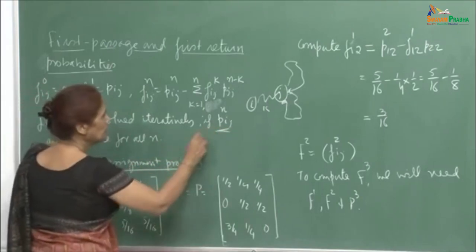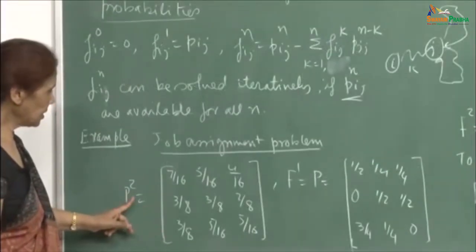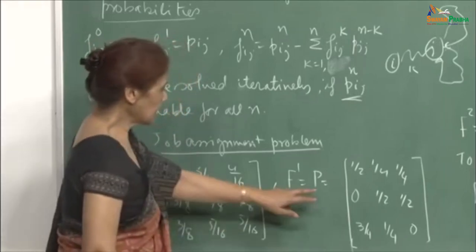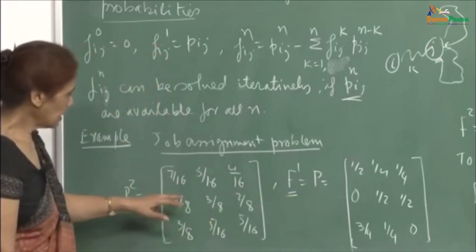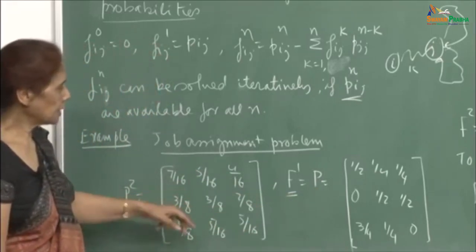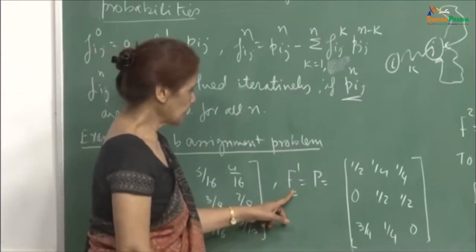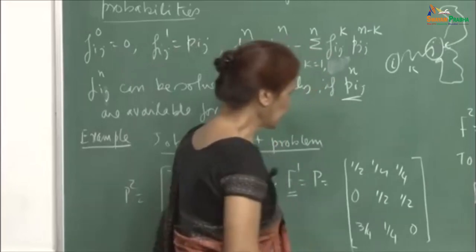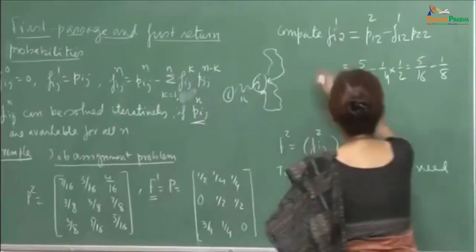We need the p_ij(n)'s for all n to compute this. Looking at the job assignment problem example, p-squared is given and we use the notation that just as p is the matrix of one-step transition probabilities, p-squared is the matrix of two-step transition probabilities. We also denote the first passage transition probabilities by the matrix f1, then f2, f3, and so on.